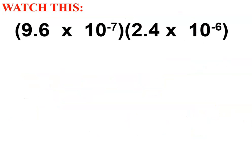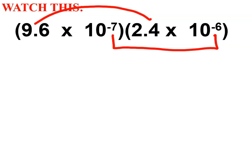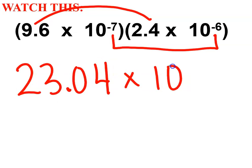Let's do that again. Coefficient times coefficient, exponent plus exponent. So, 9.6 times 2.4, 9.6 times 2.4. My final answer is 23.04. That's my new coefficient, 23.04. And negative 7 plus negative 6 is negative 13. Use your calculator if you need help.